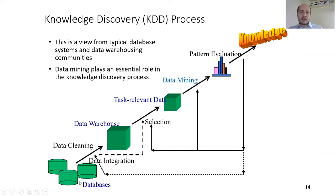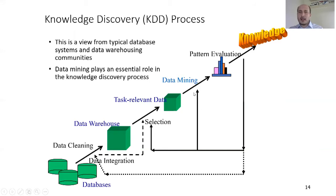At the bottom of the KDD process, we have databases in various formats coming from various platforms. To integrate that data, we first have to clean it, then convert it and put it into a data warehouse. To find the test-relevant data, we need selection tools on those data warehouses. After finding the relevant data, we apply our data mining techniques, which produce patterns. Finally, a business analyst evaluates these patterns to find the knowledge.